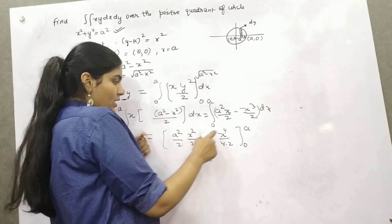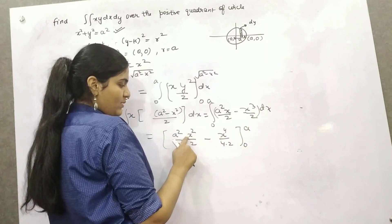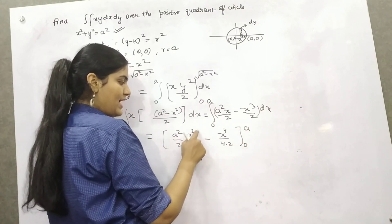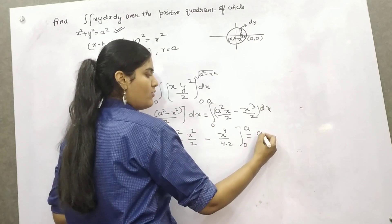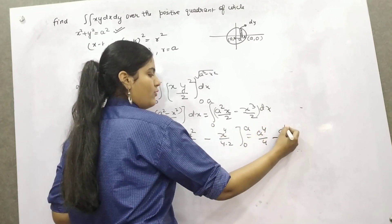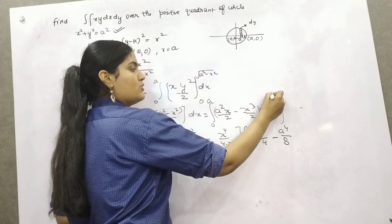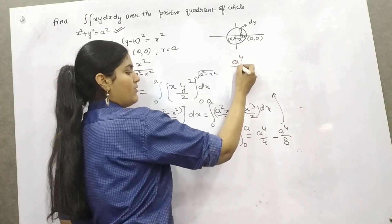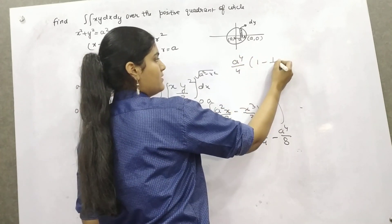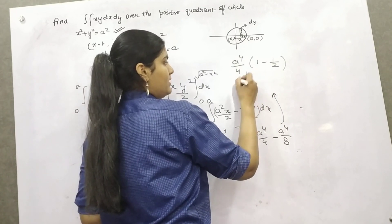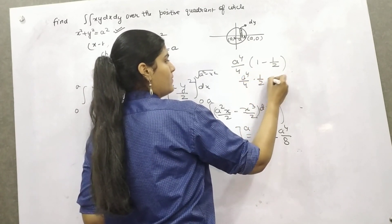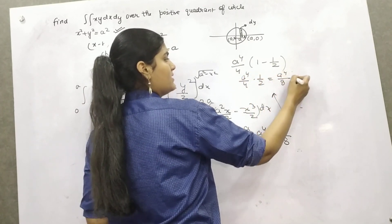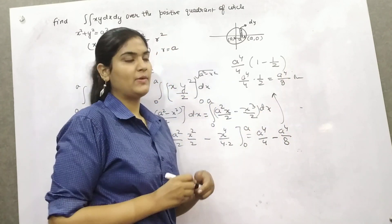So now, if you put upper limit, that will become a square and a square, that means a raised to the power 4 and a raised to the power 4. So, if you take common a raised to the power 4 and 4, what is left? That means a raised to the power 4 by 8. 1 minus half is half.